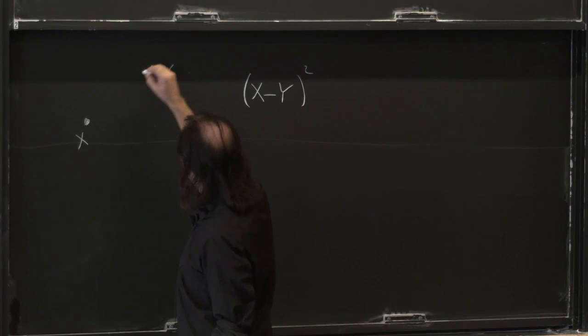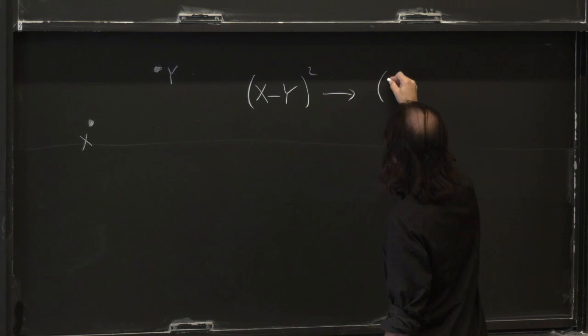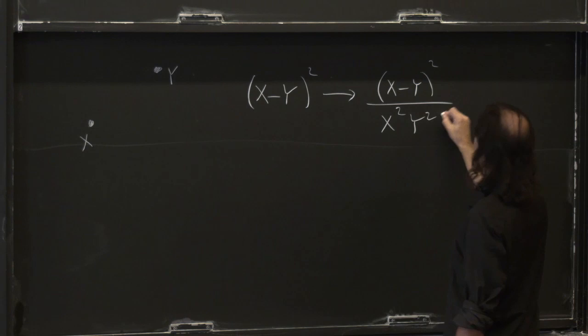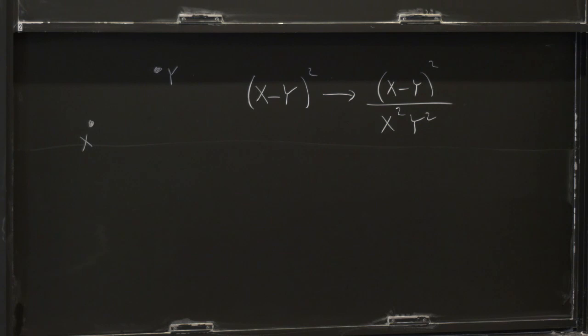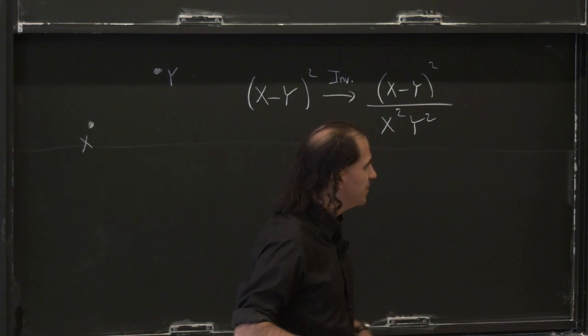If I look at two points x and y, and look at the distance between them, we can ask what happens to this under inversions — and it's a very quick computation to show that under inversions, this goes to (x minus y)² over x²y². So of course the distance is not invariant under inversions. But this gives us an idea of what is conformally invariant: if two points are null separated, the notion of null separation is conformally invariant.